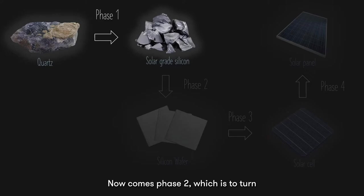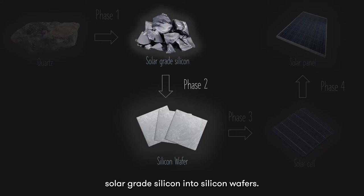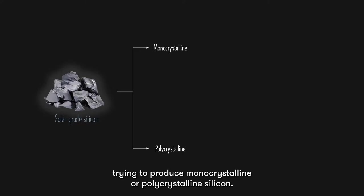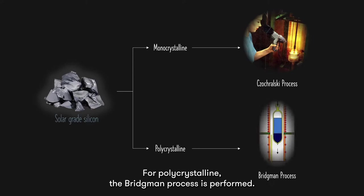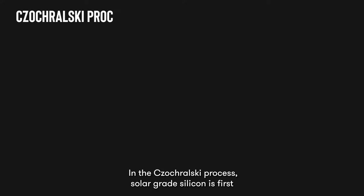Now we have finally completed phase 1 where we obtain solar-grade silicon. Now comes phase 2, which is to turn solar-grade silicon into silicon wafers. There are two different ways to process solar-grade silicon depending on whether we are trying to produce monocrystalline or polycrystalline silicon. To produce monocrystalline silicon, the Czochralski process is executed; for polycrystalline, the Bridgman process is performed.